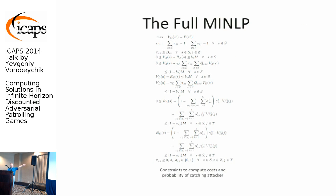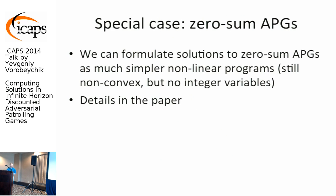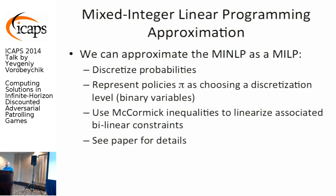While the full mixed integer nonlinear program is very complex, in the special zero-sum case it reduces to a simpler program. The key step is that by discretizing probabilities, we can represent policies by choosing a discretization level using binary variables. Introducing these binary variables into the bilinear constraints, we can linearize all of them using standard McCormick inequalities, converting the MINLP into a much more tractable mixed integer linear program (MILP). This step turns out to be not so difficult.